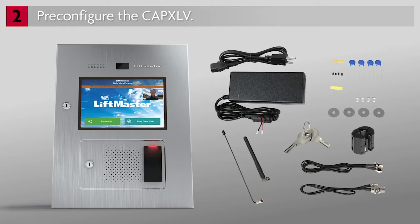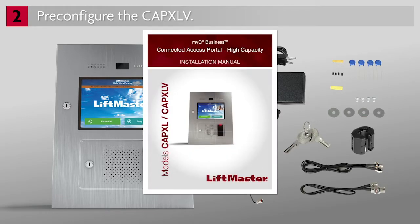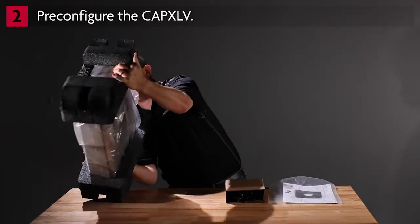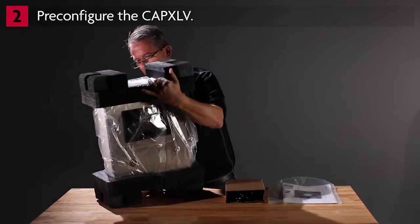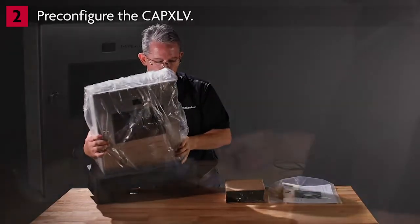Let's talk about what comes in the box. The system includes the CAPXLV access control panel, a power supply, Wi-Fi and radio antennas with cables, keys, assorted hardware, electronic components, and the manual. Unpack the CAPXLV and set it up on a protected surface such as the packing material.